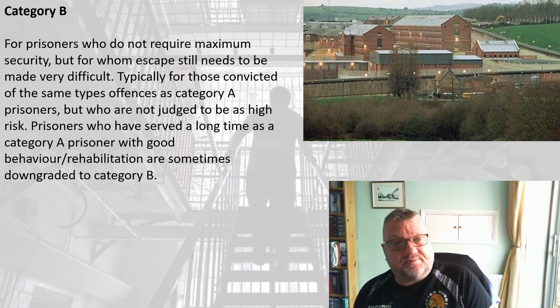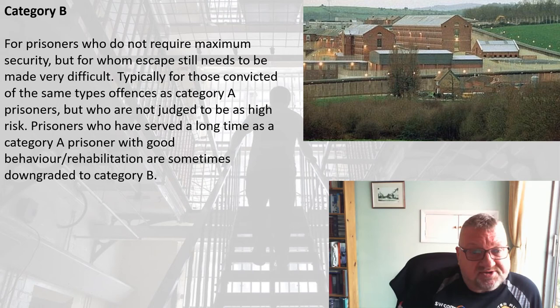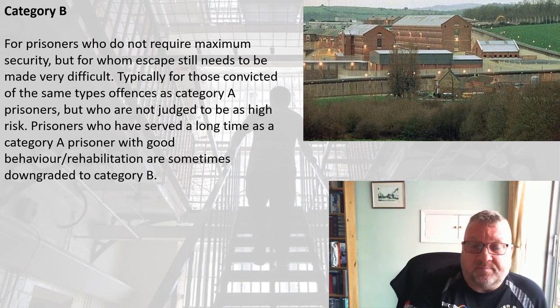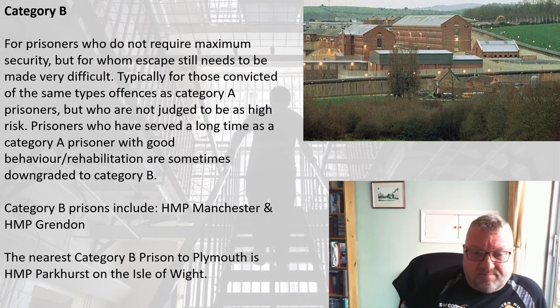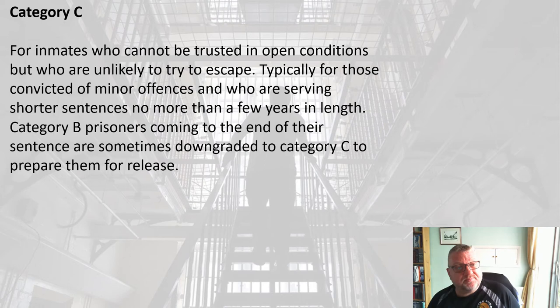Category B is for prisoners who don't require maximum security, but for whom escape still needs to be made very difficult. Typically it's for those convicted of the same types of offence as Cat A prisoners who aren't judged to be such high risk. Sometimes a Cat A prisoner who has served a long time and behaved well might be moved down to Cat B. Cat B prisons include Manchester and Grendon, with Parkhurst on the Isle of Wight being the nearest to Plymouth.